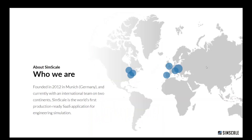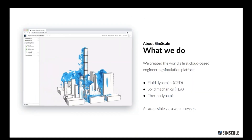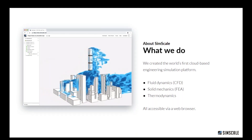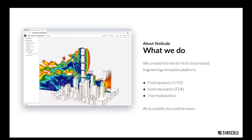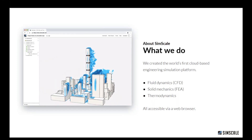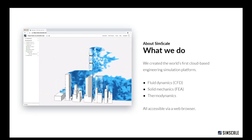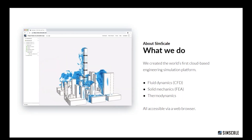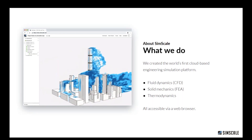Let's give you a little bit of background about SimScale and who we are. Founded in 2012 in Munich, Germany, we are a very international team based mainly in Munich and on the east coast of the US. We're growing extensively — more than 85 people and expanding fast. We are proposing an engineering simulation platform accessible from your browser, enabling you to simulate your designs through fluid dynamics, solid mechanics, and thermodynamics — from setup through simulation to post-processing of results.